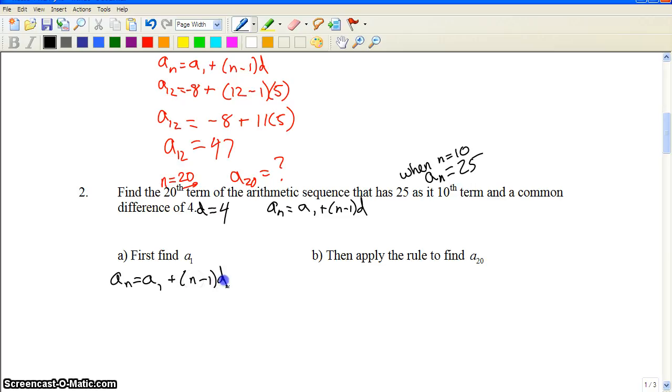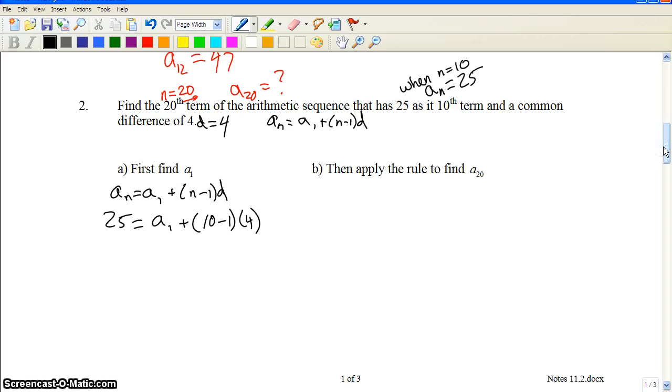We're going to use this equation. We're going to start putting values in there. So a sub n is 25. a sub 1 we don't know. There's no information based on a sub 1. We know what the n. If 25 is our nth term, if 25 is a sub n, that means n has to be 10. And d we were given as 4. Can you solve that for a sub 1? Is that math crazy? No. It's the notation that's crazy and responding to the vocabulary. So what do we get for a sub 1? We get 25 equals a sub 1 plus 9 times 4, which is a sub 1 equals negative 11.